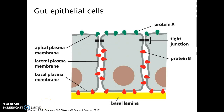On the basolateral side, we have another transporter that moves the sugar out of the cell and into the bloodstream, and this transporter uses passive transport. If apical proteins moved down to the basolateral side or basolateral proteins moved up to the apical side, we would move a sugar into the cell and it would just drift right back out.